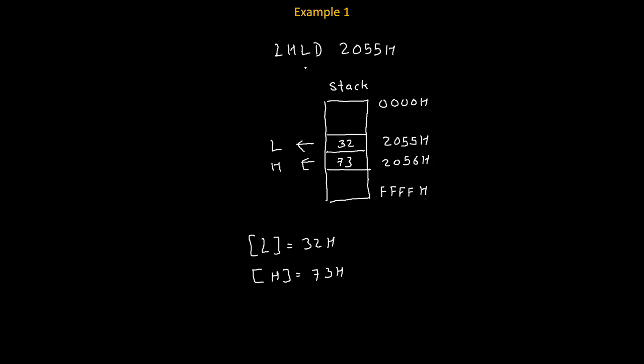Then next thing that we will discuss is how many bytes this instruction is of. Now this instruction is of 3 bytes. LHLD will have its own opcode that will be 1st byte, 20 is 2nd byte and 55 is 3rd byte. How we can remember: if 4 digit number is given in instruction, then simply we can say that it is a 3 byte instruction.